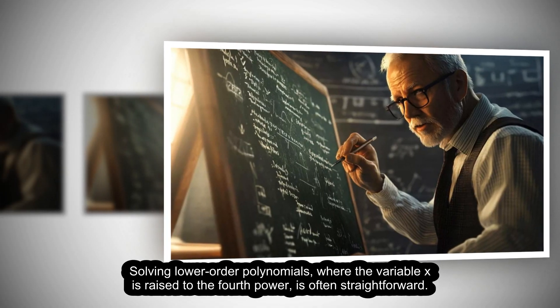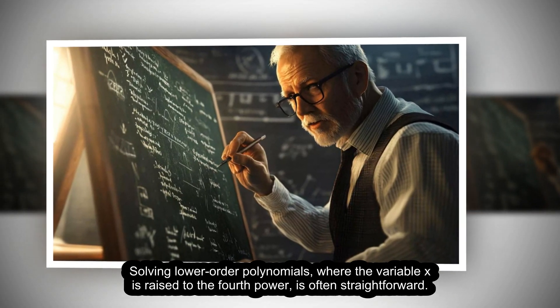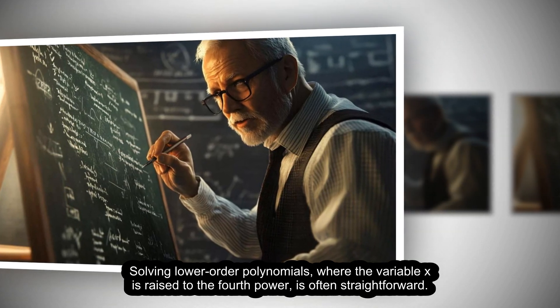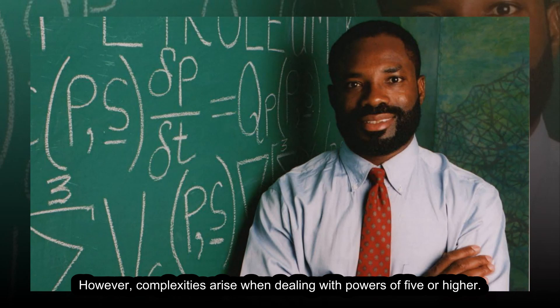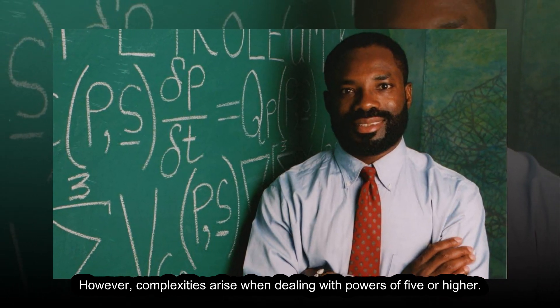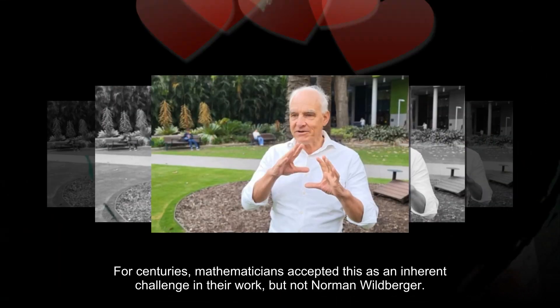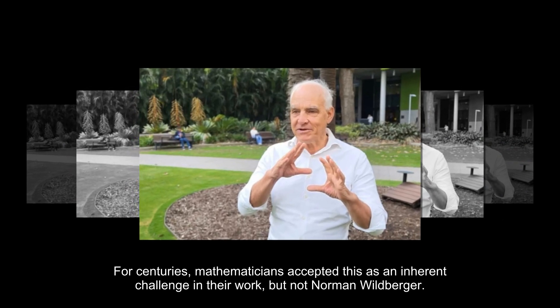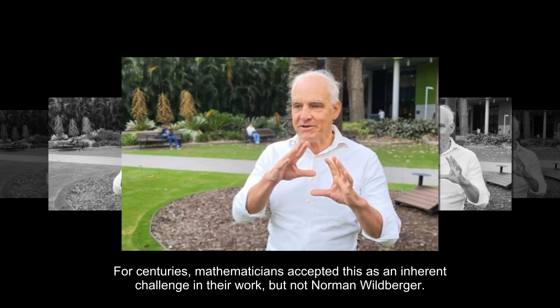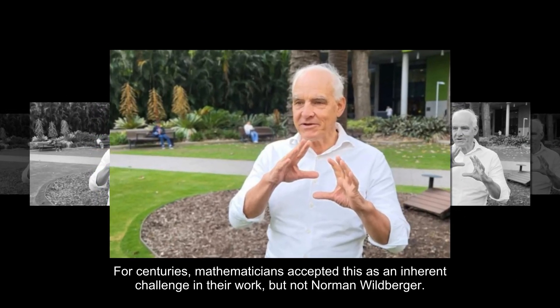Solving lower-order polynomials, where the variable x is raised to the fourth power, is often straightforward. However, complexities arise when dealing with powers of five or higher. For centuries, mathematicians accepted this as an inherent challenge in their work, but not Norman Wildberger.